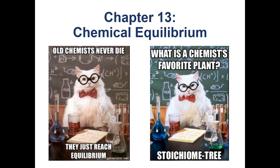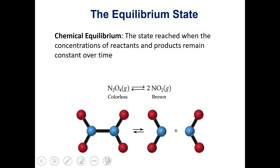In this video, we're going to talk about chemical equilibrium. Chemical equilibrium is a state reached when the concentrations of our reactants and products remain constant over time. We tend to think about a chemical equation as going from reactants to products, as if we always get rid of all the reactants and end up with all products.